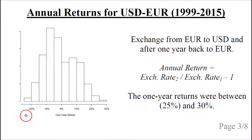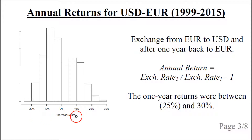As we can see, the annual returns could be quite extreme — as low as minus 25 percent or as high as plus 30 percent. A lot of the annual returns were greater than minus 10 percent or plus 10 percent, so it would be desirable to eliminate these large changes in the currency exchange rate.